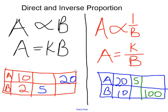Say for example, you have something like this, where you have a given as 10 and b given as 2, and you are asked to fill in this table.